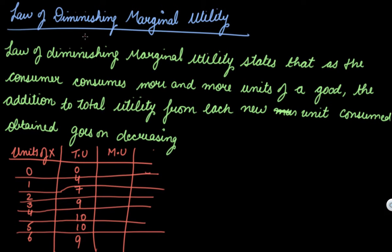In this video, we will be understanding the law of diminishing marginal utility. The law of diminishing marginal utility states that as the consumer consumes more and more units of a good, the addition to the total utility from each new unit consumed goes on decreasing.